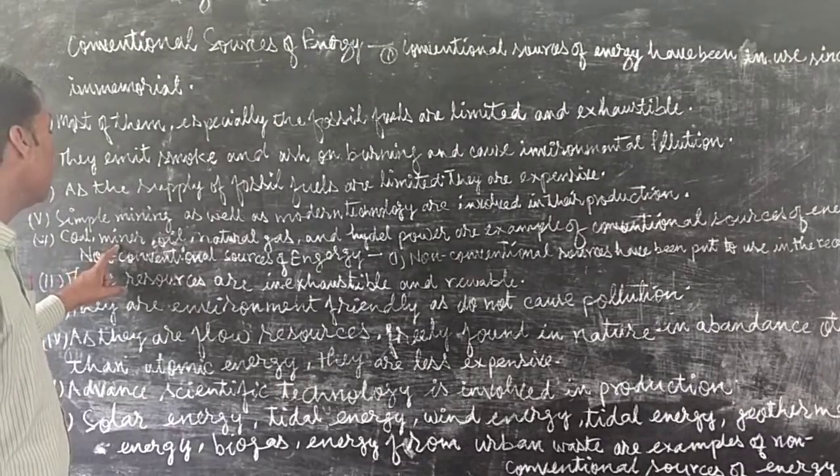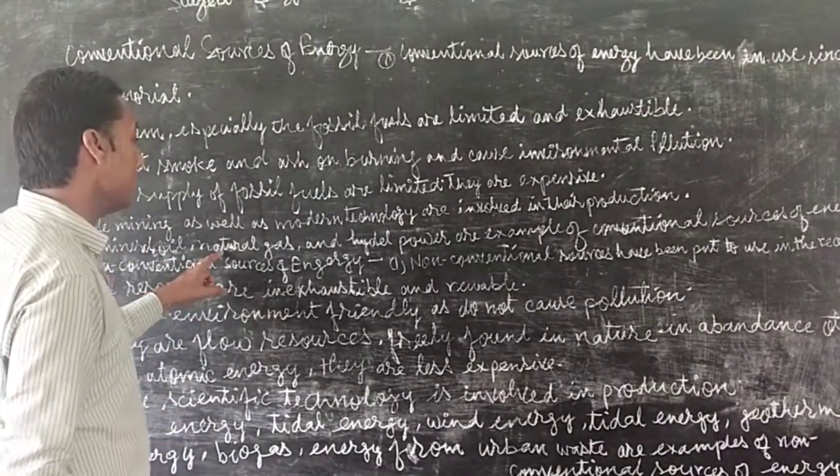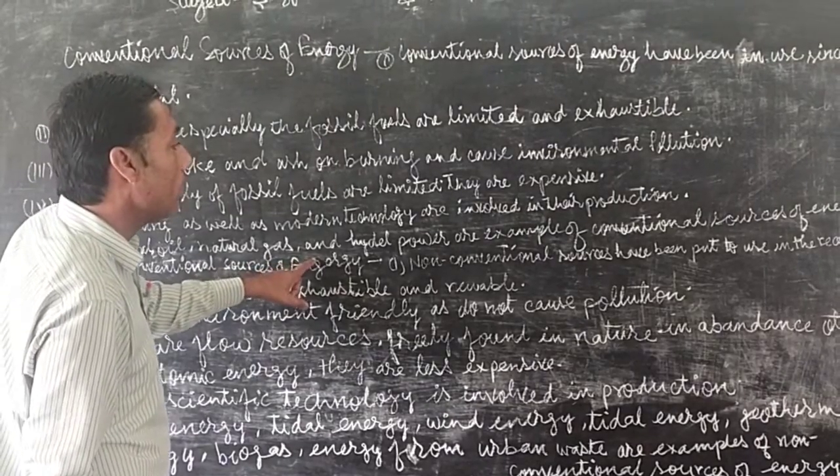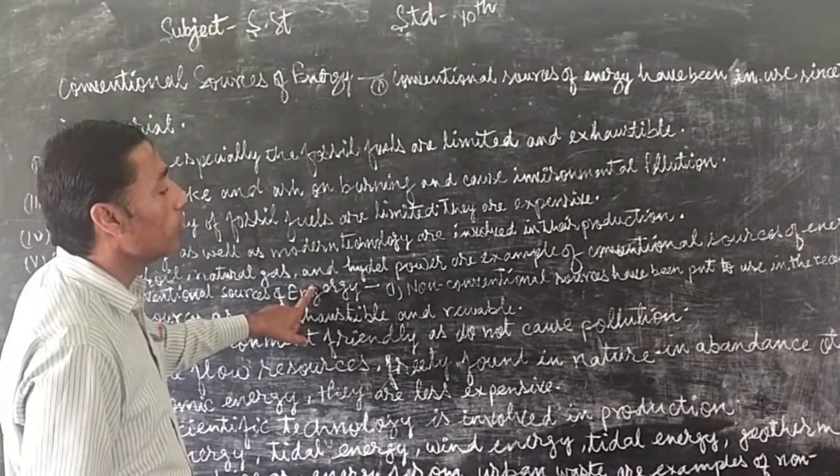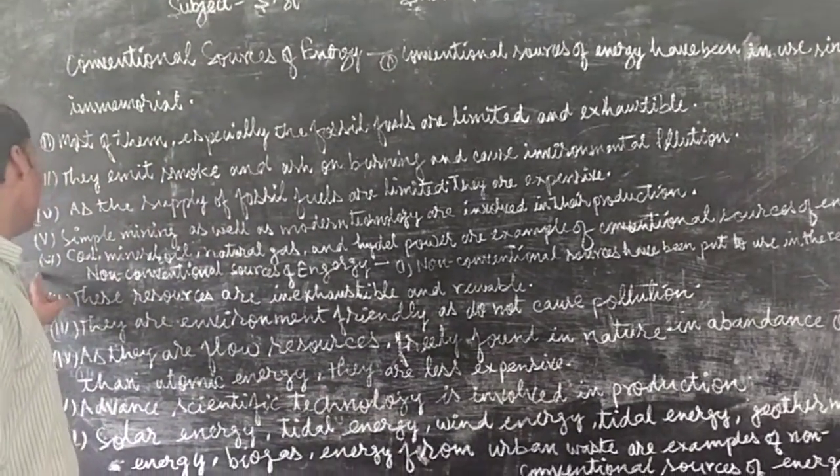Next number six, coal, mineral oil, natural gas, and hydro power are the examples of conventional sources of energy. These are the examples of the conventional form of energy.